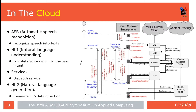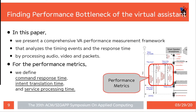A smart speaker works with the voice service cloud implementing ASR, NLU, service, and TTS modules. In the case of third-party voice services — called Amazon Skills, Google Action service, content providers, or IoT servers — the requested actions or contents will be served by third-party servers. We do not know why the response time of voice commands is slow, and what is the performance bottleneck of the VA service. In this paper, we present a comprehensive VA performance measurement framework that analyzes timing events and response time by processing audio, video, and packet data.